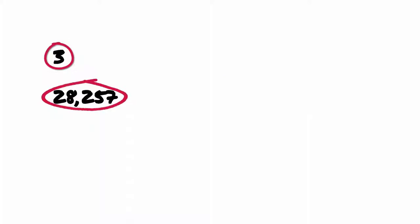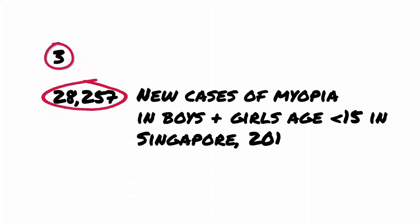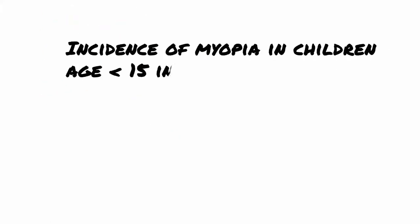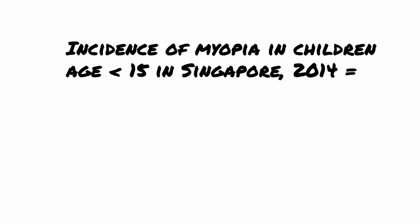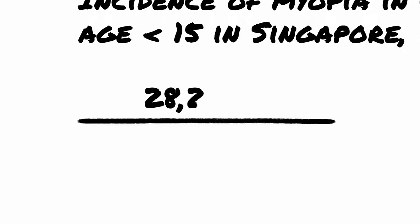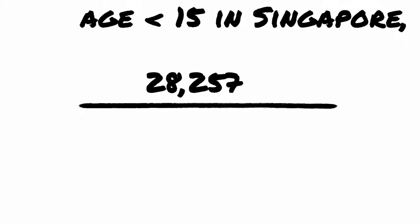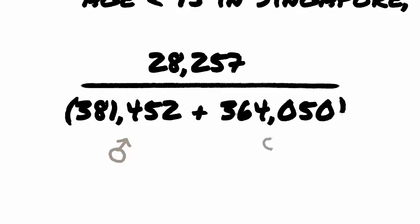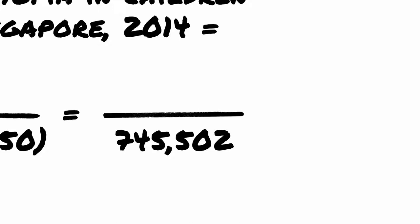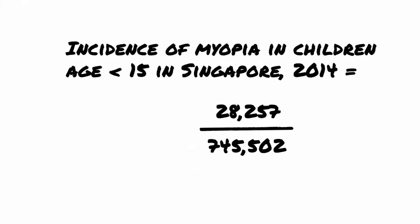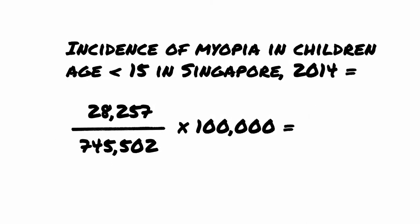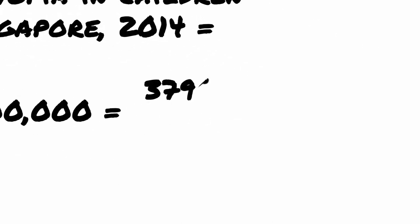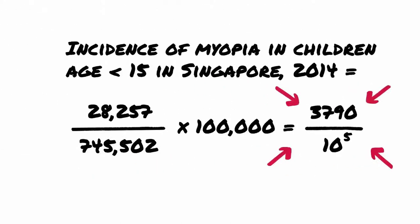Example 3. We now know that there were 28,257 new cases in both boys and girls aged under 15. Let's now calculate the incidence for all children aged 0 to 14. To calculate incidence, we divide the number of new cases, 28,257, by the population at risk — 381,452 boys plus 364,050 girls, which makes 745,502 children — then multiply by 100,000. This gives us 3,789 incident cases of diagnosed myopia per 100,000 children aged under 15 in Singapore in 2014.